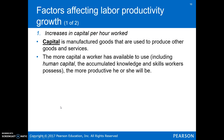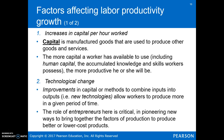What determines labor productivity growth? Capital is a major factor — a good used to produce other things, from a wheelbarrow to a computer to software. This includes human capital: the knowledge and skill workers have through education or on-the-job experience. Technological change also matters — improvements in capital or methods, like Henry Ford's assembly line or microprocessors, that increase worker productivity.